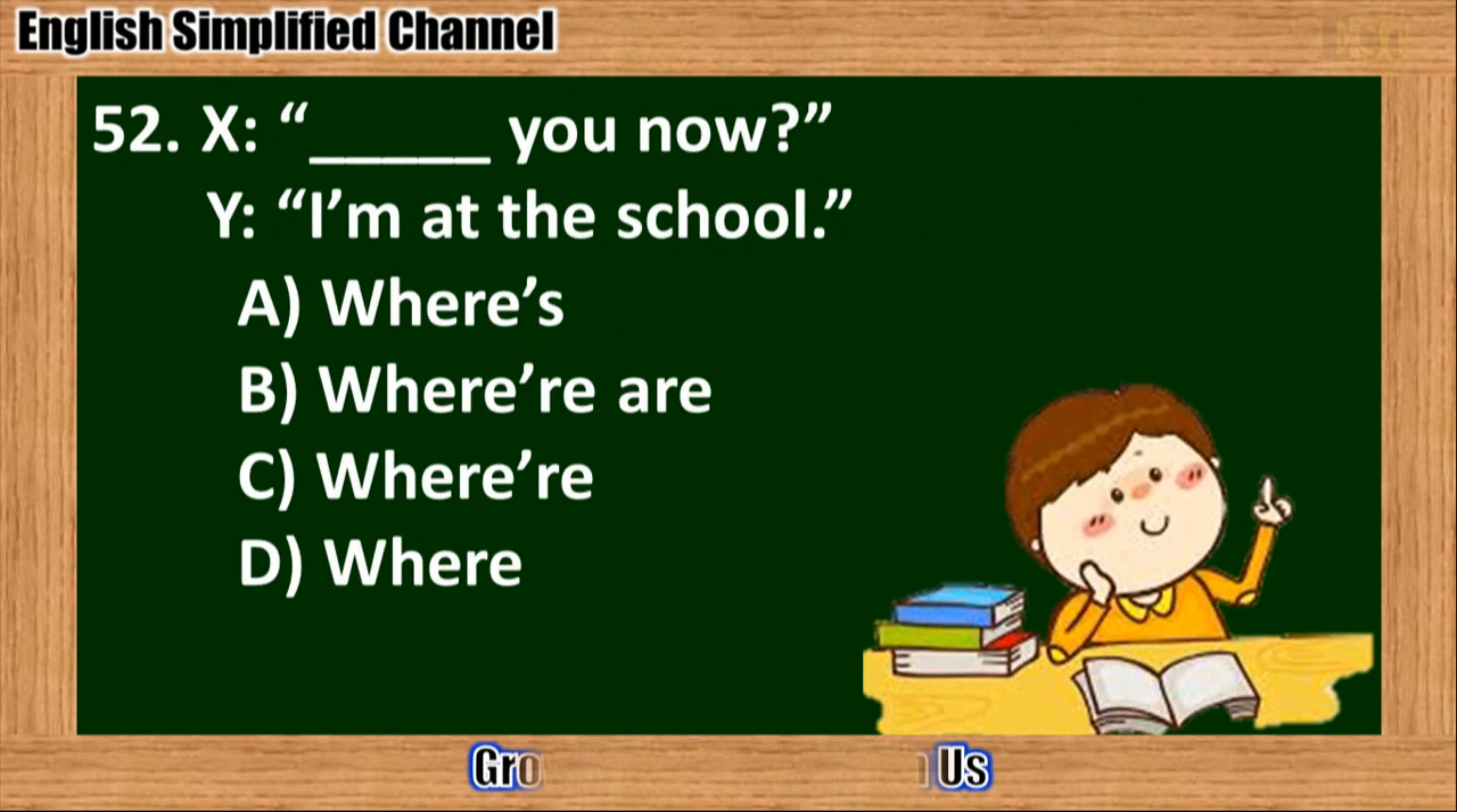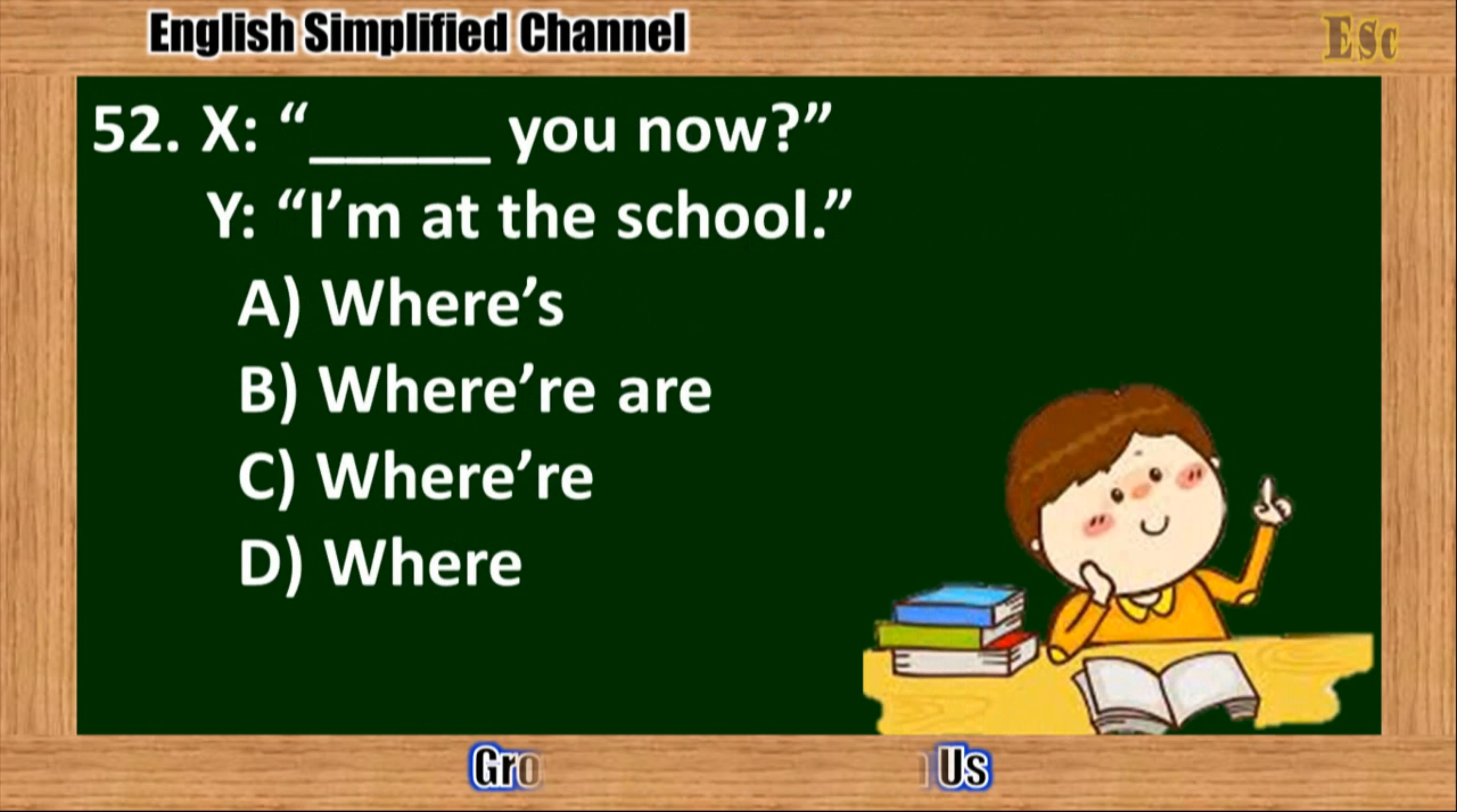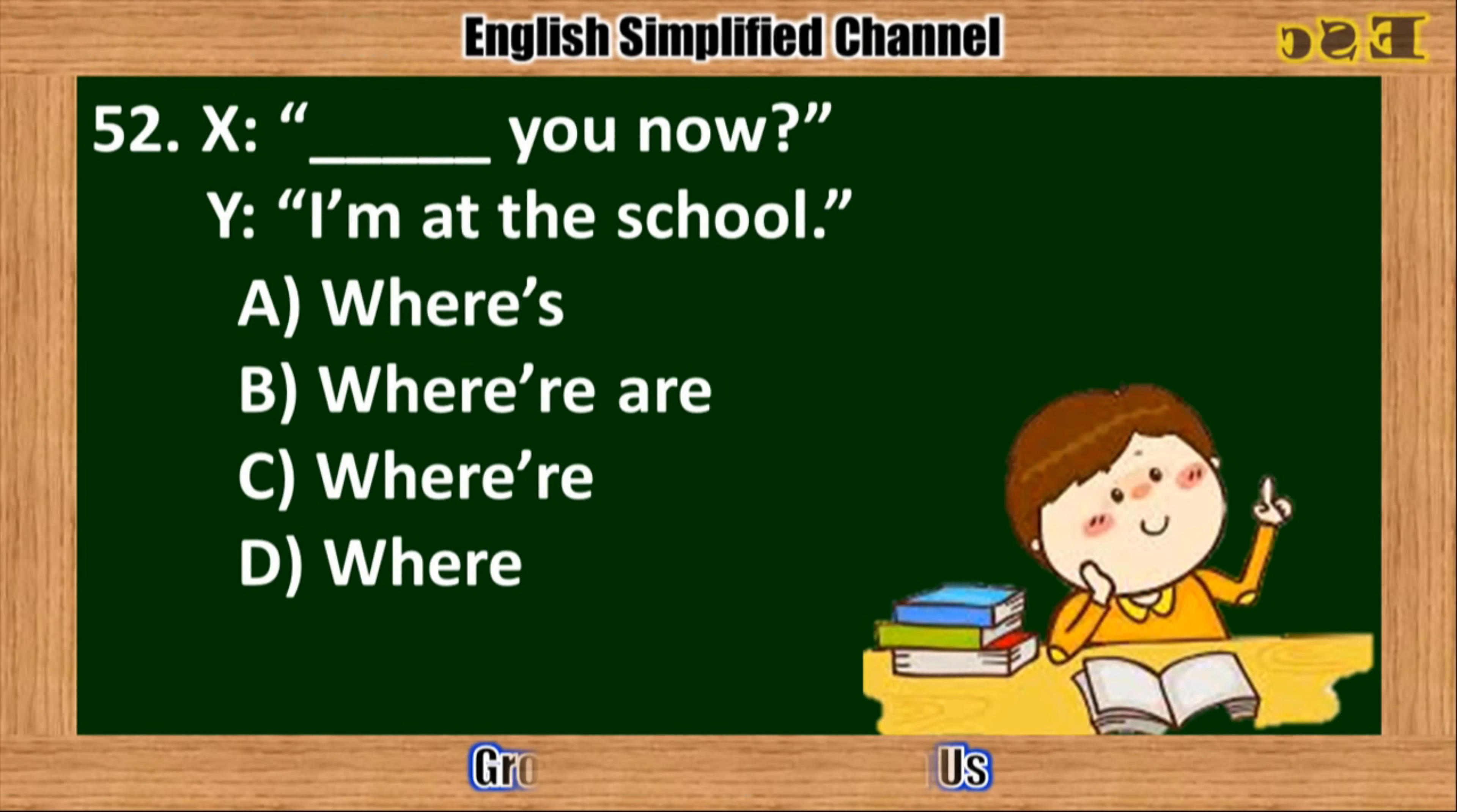52. Blank you? I'm at the school. A. Where's. B. Where are. C. Where are. D. Where.